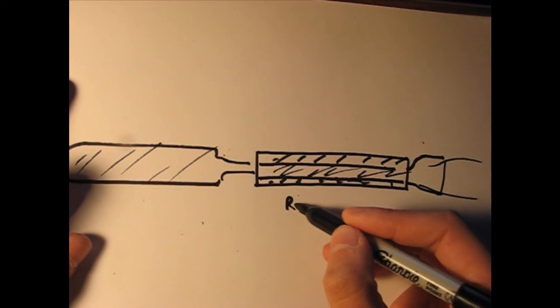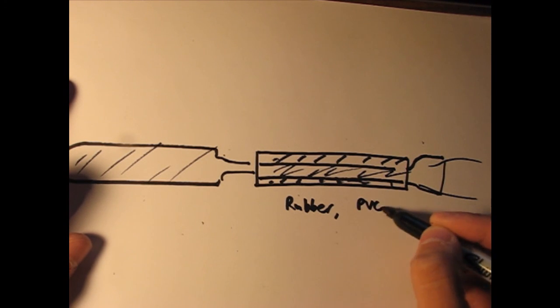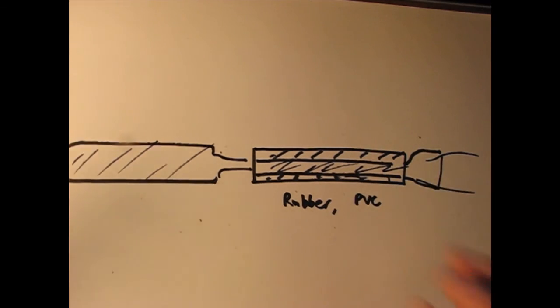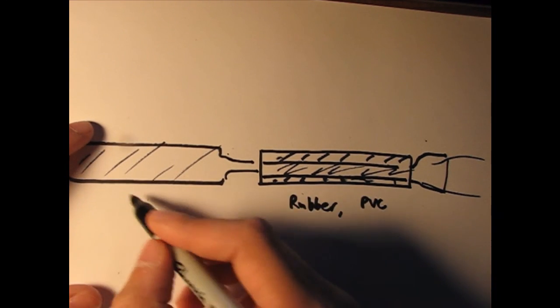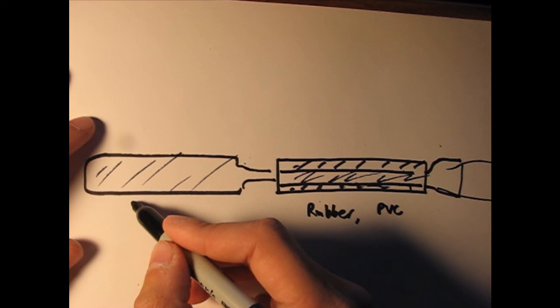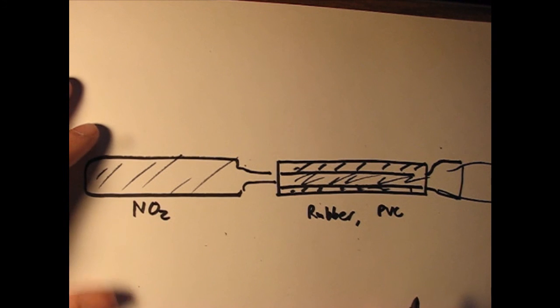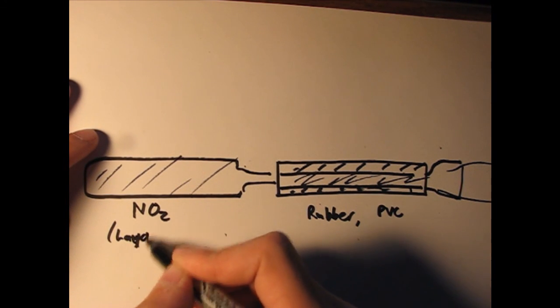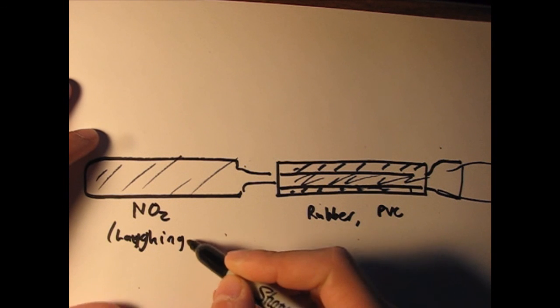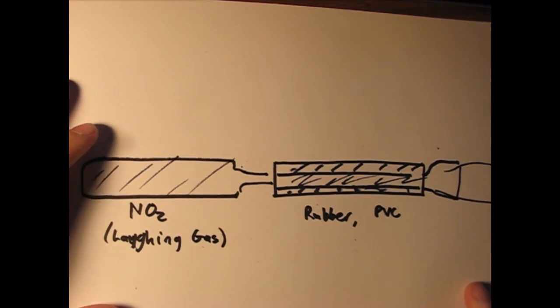So typically what we see here is like some sort of rubber or PVC or something for the fuel. It doesn't have to be anything fancy. It just has to burn with an oxidizer, which is typically selected to be nitrous oxide, laughing gas. That's a very common one you see for hybrid rocketry.